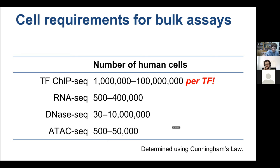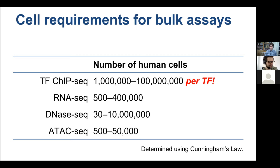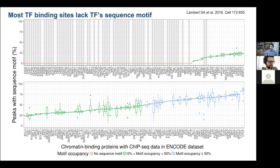If you use ChIP-seq as a readout for transcription factor presence, many cases don't have strong matches to the motif. CTCF is exceptional — about 85% of CTCF binding sites have a great CTCF motif. But CTCF is the teacher's pet: many things work for prediction on CTCF that don't work elsewhere. Many transcription factors have less than 50% of peaks with good motif matches, and some DNA-binding proteins have no sequence motif at all.